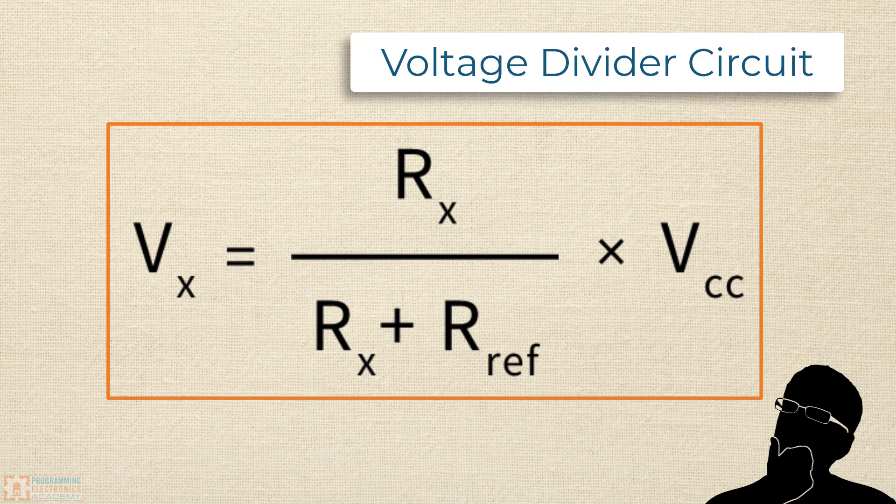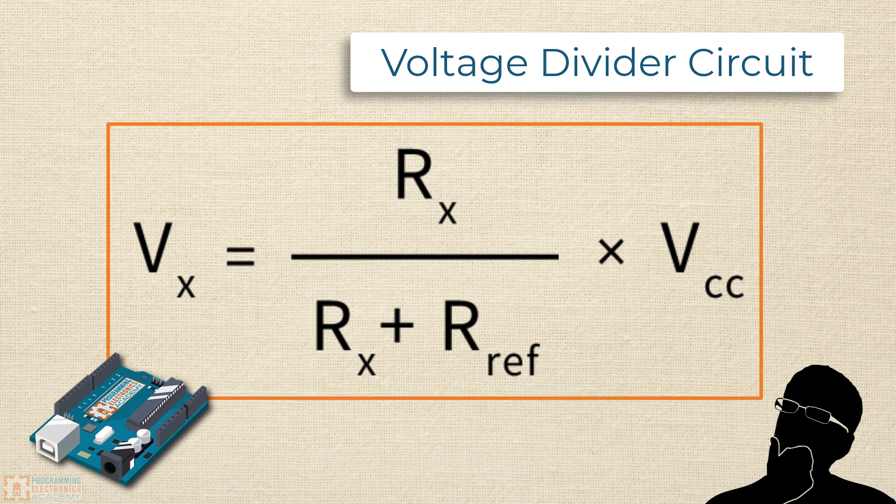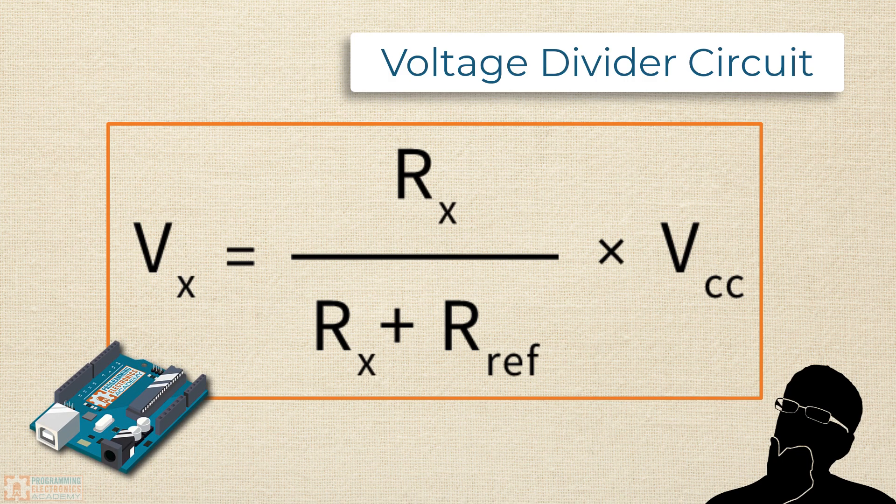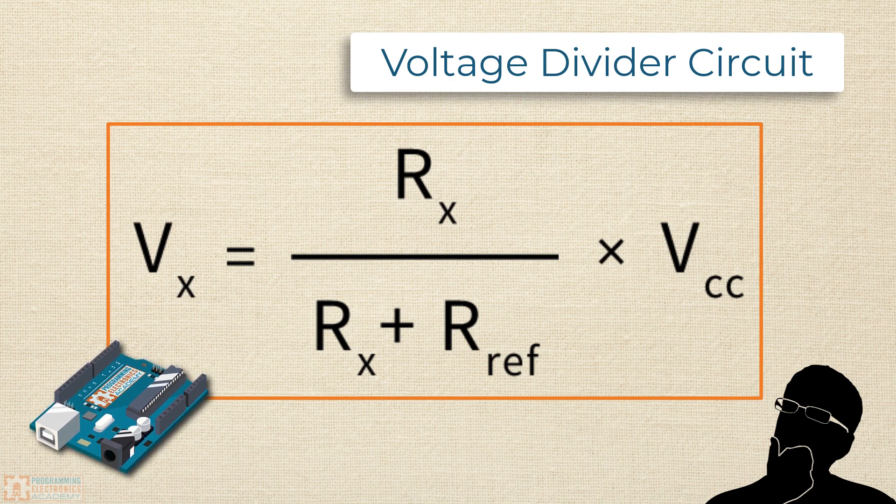So how the heck are we going to measure the voltage at Vx? Well, lucky for us, the Arduino has an analog-to-digital converter that's built right in, and we can use it to measure the voltage at Vx. The issue becomes, though, is that the error of the measurement grows as the difference between our reference resistor and the unknown resistance value grows. So the bigger that difference, the greater the error. So what we need to do is pick a reference resistor as close to the unknown resistance value as possible. But wait a second. We have no idea what the unknown resistance value is. So how can we possibly know which reference resistor to choose?